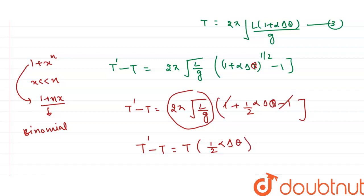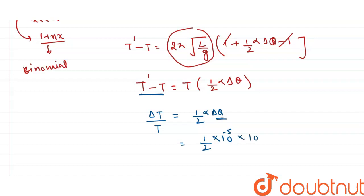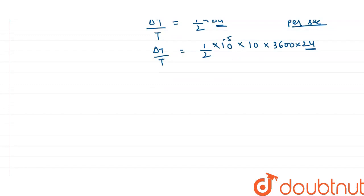Now we calculate the change in time period. ΔT/T = ½ × 10⁻⁵ × 10 degrees centigrade. This gives the change per second, and we need to calculate it for one day. In one day there are 60 × 60 × 24 seconds. After calculating, the final change in time period comes out to be 4.32 seconds.